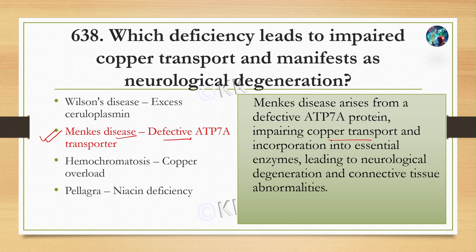Note that both Menkes disease and Wilson's disease are related to copper accumulation issues. Excess copper accumulation can occur in both. Hemochromatosis can also cause copper overload issues, and pellagra is related to niacin deficiency.